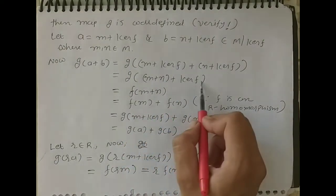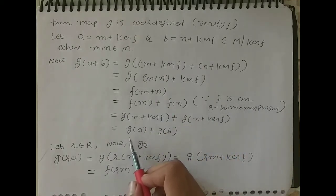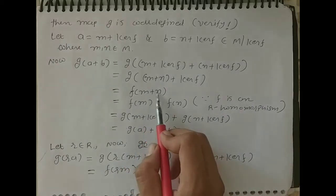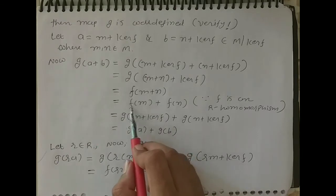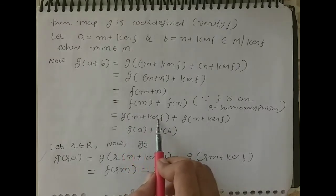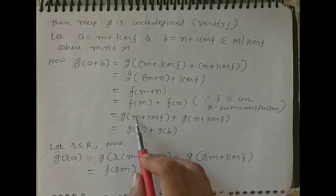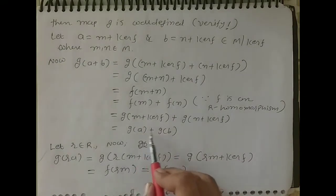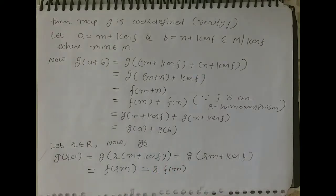Now G of A plus B equals G of (M plus kernel of F) plus (N plus kernel of F), which gives G of (M plus N plus kernel of F). By the definition of G, this equals F of (M plus N). Since F is an R-homomorphism, F of (M plus N) equals F of M plus F of N. Writing back, this equals G of A plus G of B. Hence the first condition for R-homomorphism is satisfied.